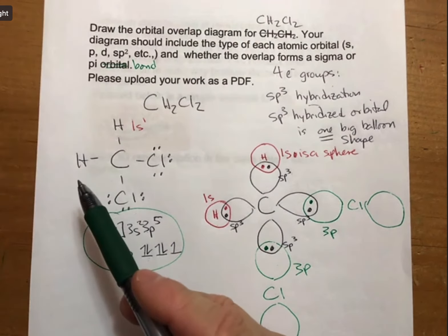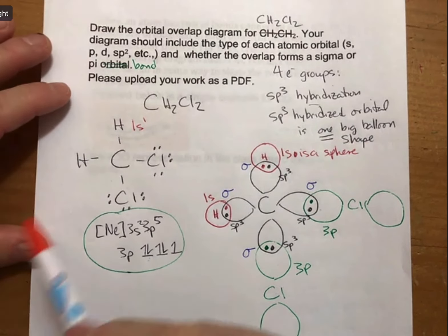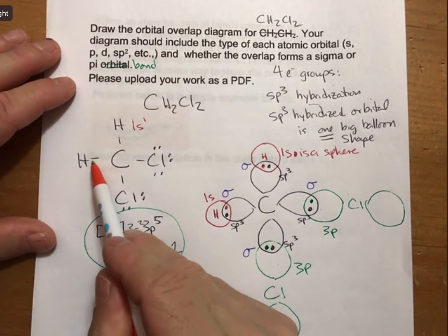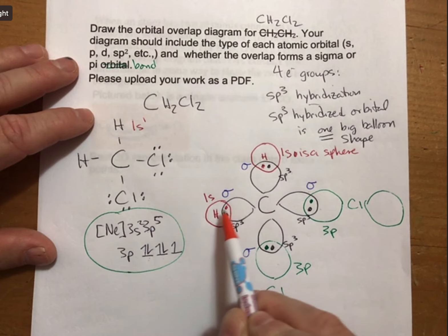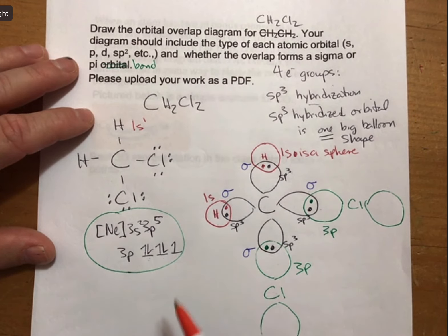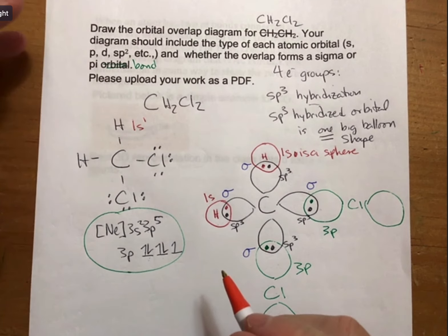This is a sigma bond. All of these are. We know they're sigma bonds because they are single bonds. We also know they're sigma bonds because the electrons are between the two nuclei and that's what makes a sigma bond.